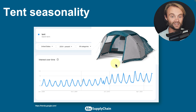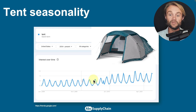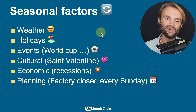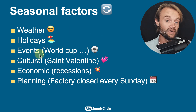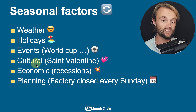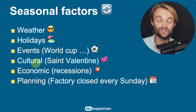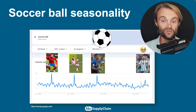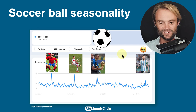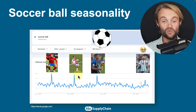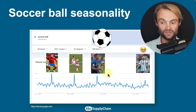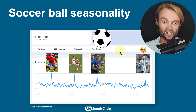We have a lot of examples. I've been working in the sporting goods business for a very long time. For example, this is the seasonality of the tent — you have a big peak for springtime and before going on holidays and camping. You do have a lot of seasonal factors like the weather, holidays, events such as the World Cup, cultural events like Saint Valentine, economic factors, or even the planning of your factory that closes every Sunday. For the soccer ball, I was working on the forecast before and you have a big peak every World Cup, every four years — except this one with the pandemic, which was five years after.